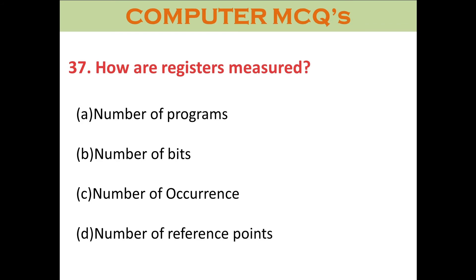Question thirty-seven: How are registers measured? A. Number of programs. B. Number of bits. C. Number of occurrences. D. Number of reference points. The right answer is number of bits.